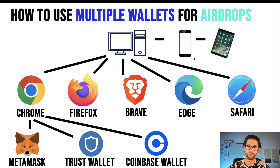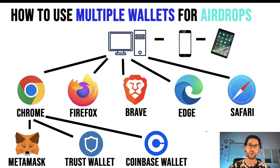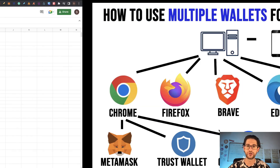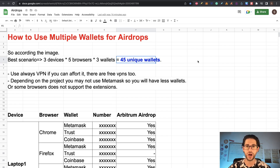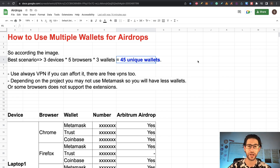This method keeps each wallet completely isolated, and this is the method I use. Not always can you use the same wallet for different airdrops — right now we've been doing a lot of Aptos airdrops, and for those you need specific addresses, so you probably won't be able to get 45 unique wallets; you may have 10 or 15. But that is okay — we don't want to have hundreds or thousands of wallets, because you will be blacklisted for that.